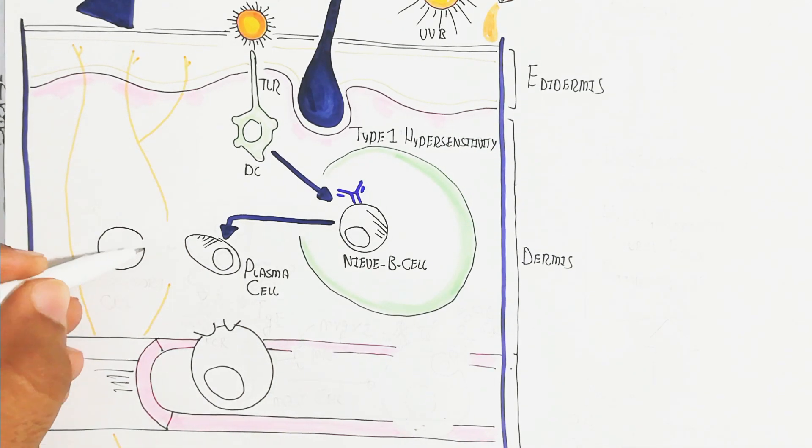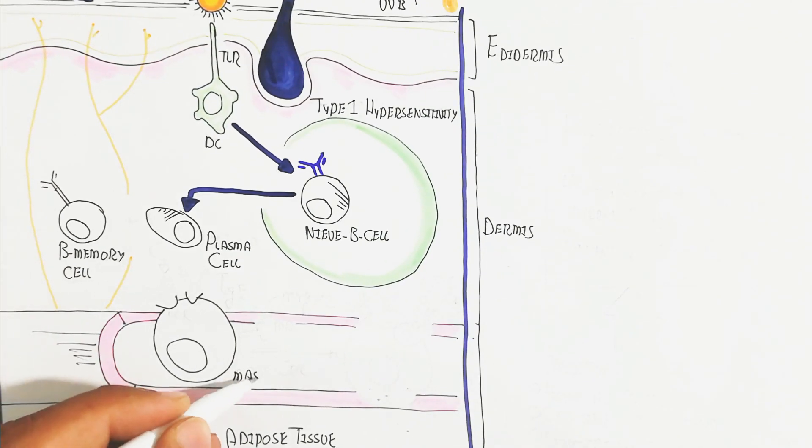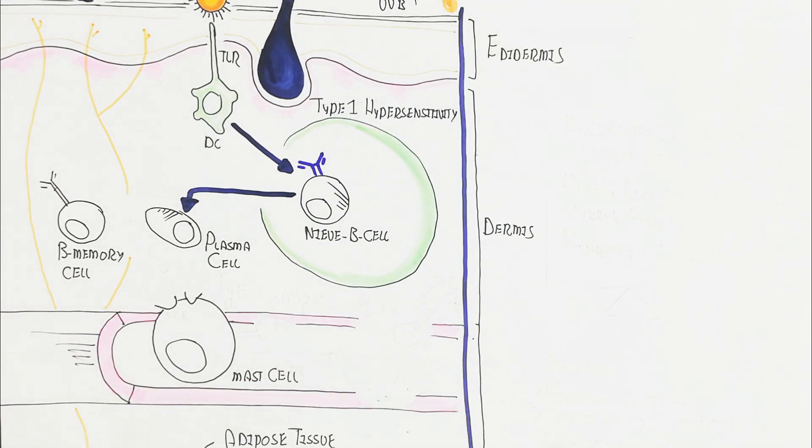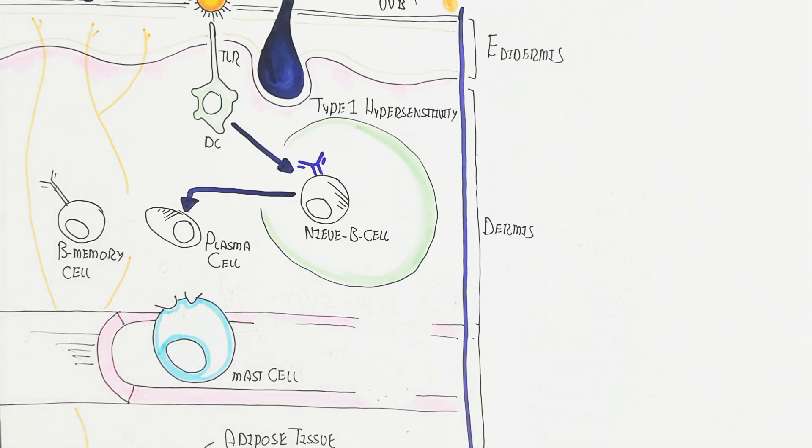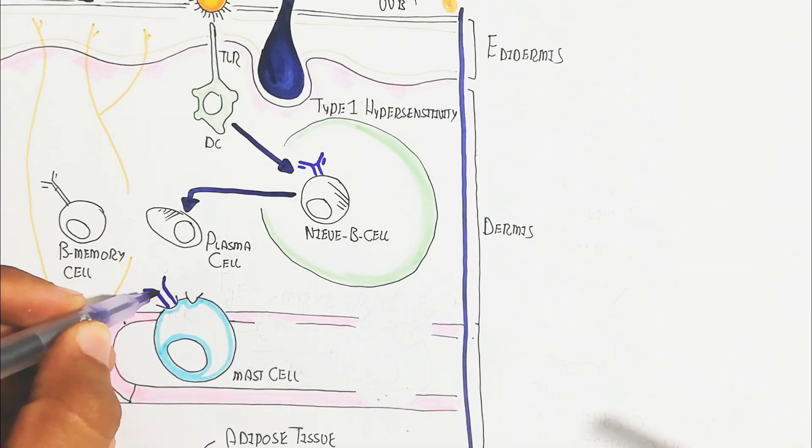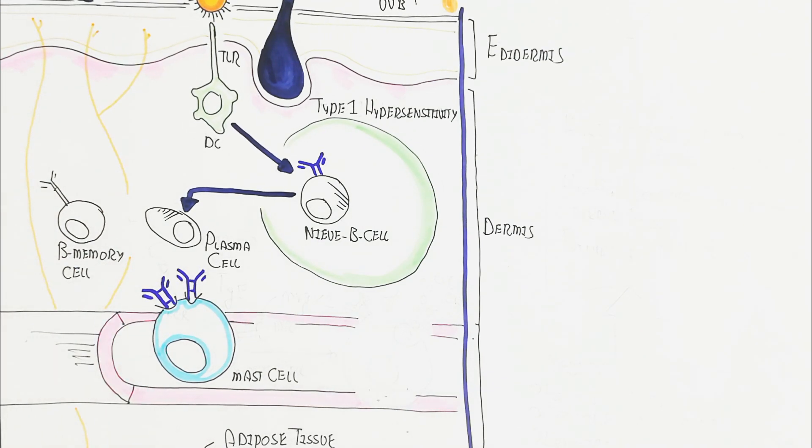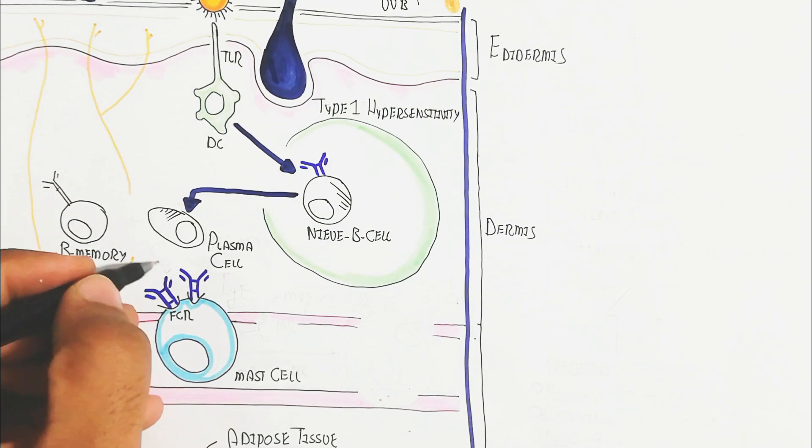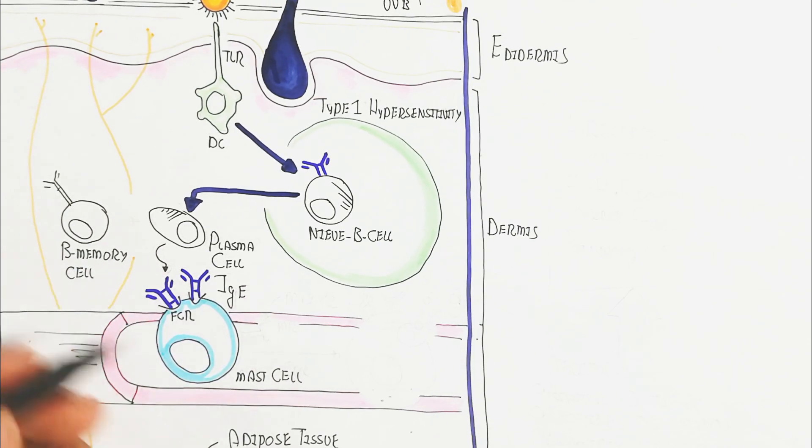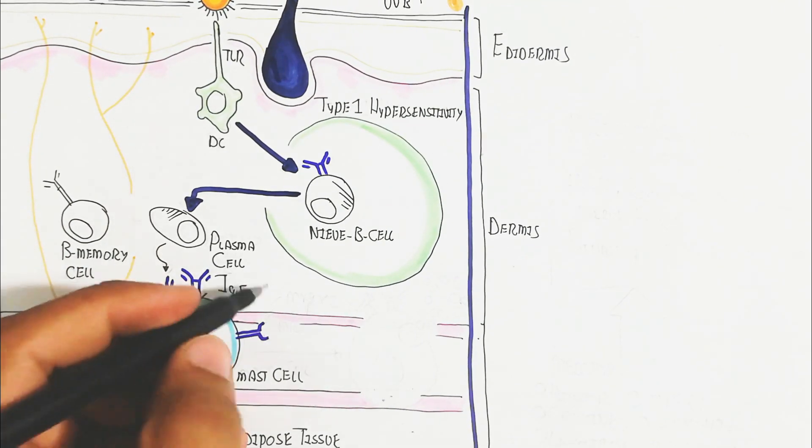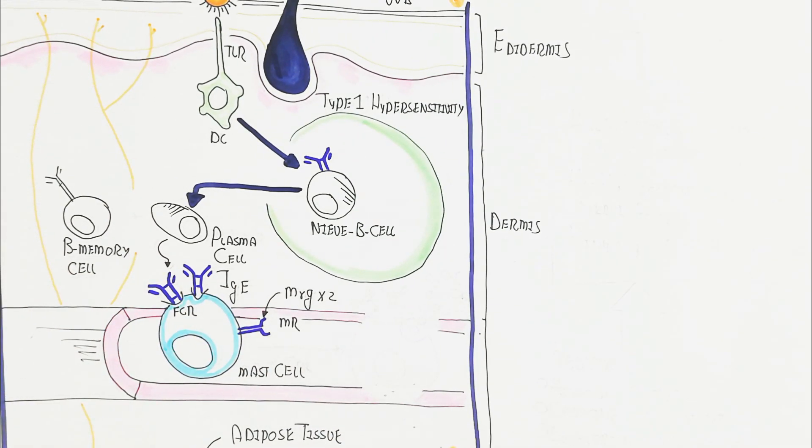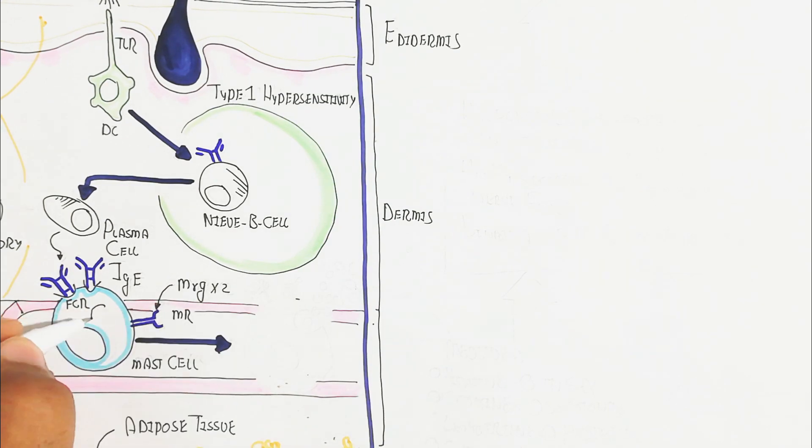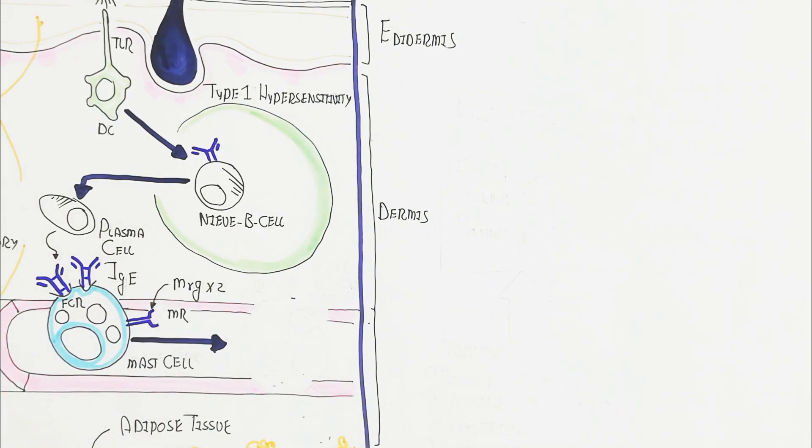After this, plasma cell and B memory cell - basically here is the mast cell. The Fc receptors are present and the immunoglobulin E is intact with the plasma cell. The MRGX2, the M receptor, is involved for the autocrine leading to activation of the mast cell.